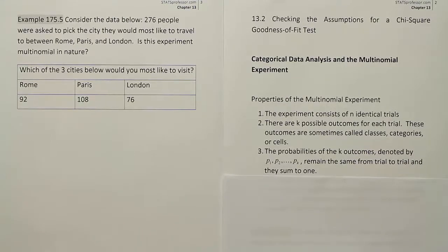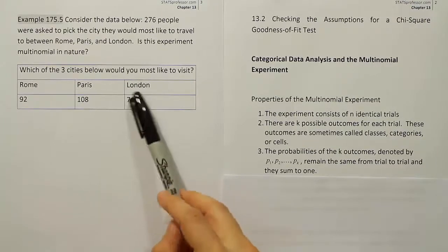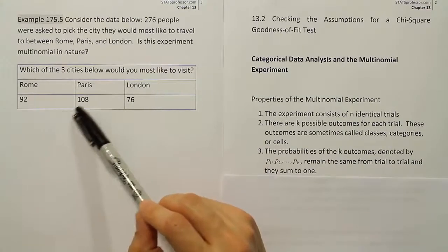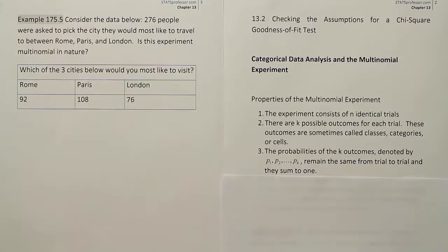Now as far as the next thing, does the probabilities remain the same? We'll assume so because this is going to be all done in a short time period and we'll assume there's a fixed preference out there in people for these three different cities and we're just kind of trying to discover what that preference is. But certainly those percentages would assume to be constant, at least for a time.